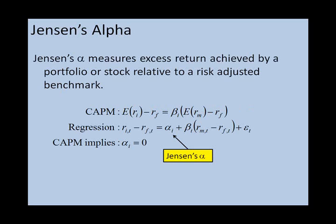The first measure we're going to look at is Jensen's Alpha. We've seen this measure several times before in class. To calculate Jensen's Alpha, we're going to run a regression. The dependent variable will be the excess returns on the funds, and the independent variable will be the excess returns on the market. The CAPM implies that the intercept, or Jensen's Alpha, should be equal to zero. If these funds do perform abnormally, then we might expect the Alpha to be greater than zero.